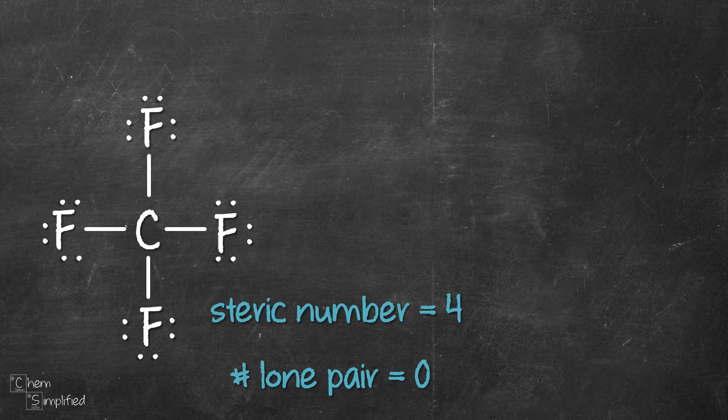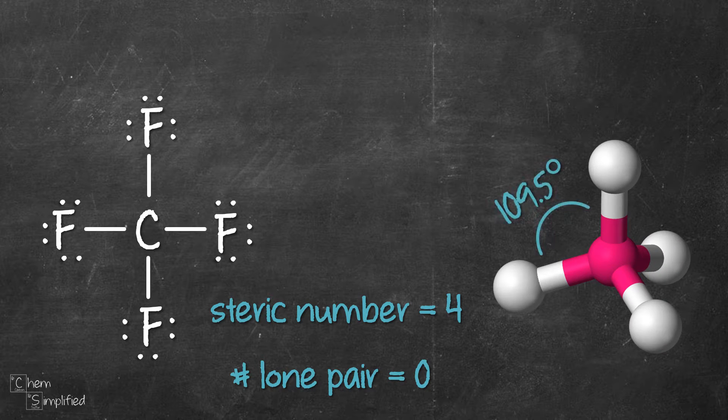So the four groups will arrange themselves so that they are as far apart as they can be from one another equally, and it will look like this. The bond angle would be 109.5 degrees. We call this tetrahedral.